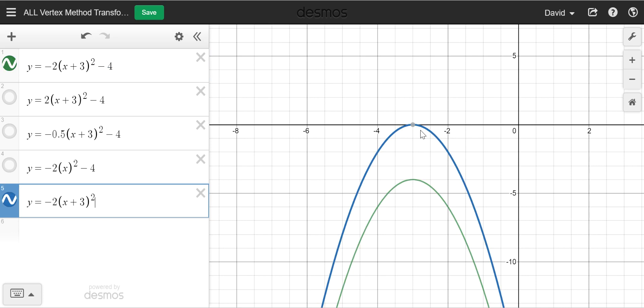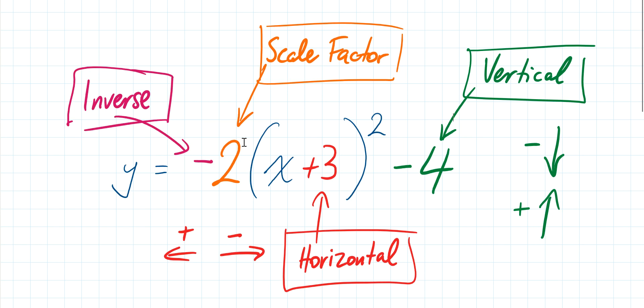So those are our four different transformations. We have our inverse, which comes from our negative sign. We've got our scale factor, which comes from our value out front — sometimes called the a value. This is our horizontal transformation, which comes from our value inside the bracket, doing the opposite of what we'd expect: positive moves negative, negative moves positive. And this is our vertical transformation, doing what we'd expect: positive shifts the whole thing up and negative shifts the whole thing down. Hopefully you understood that and followed — well done, and I'll see you guys again next time.